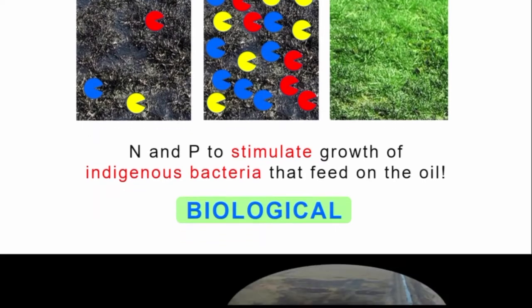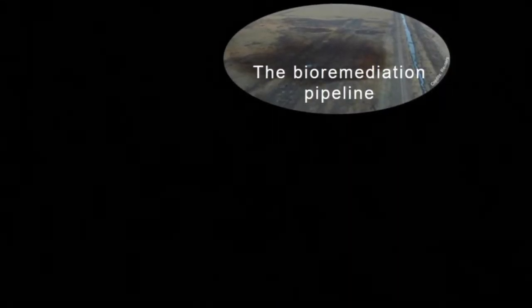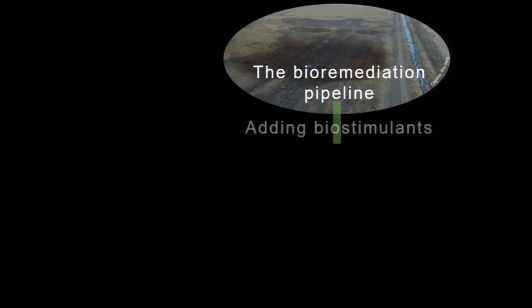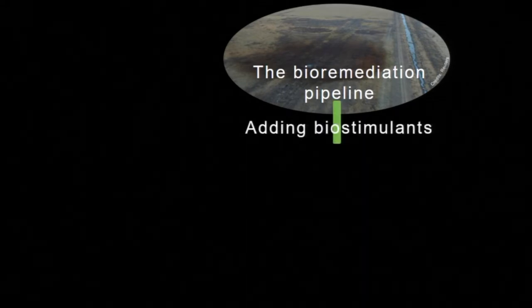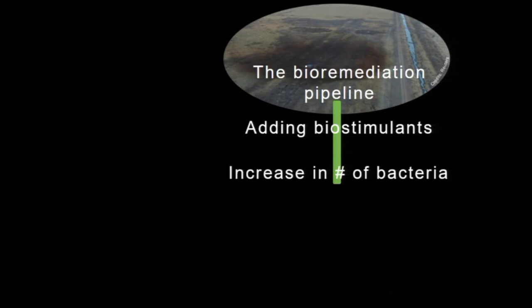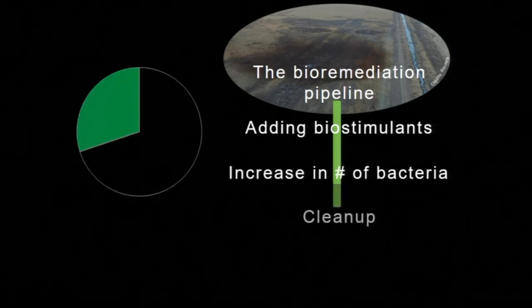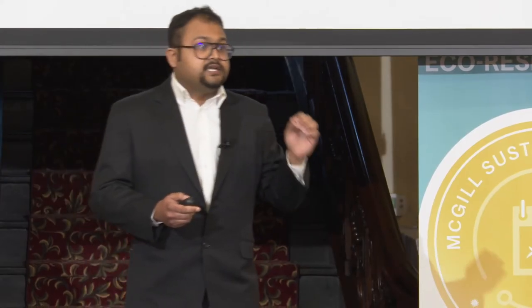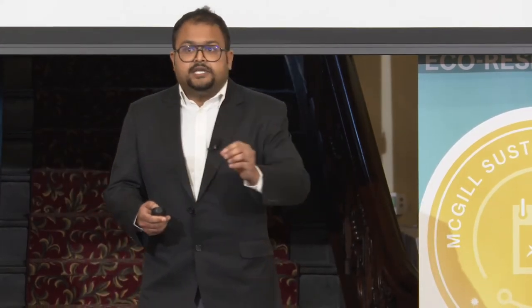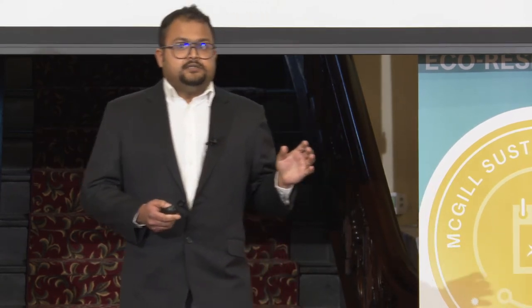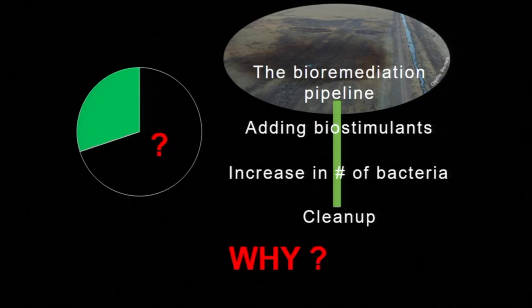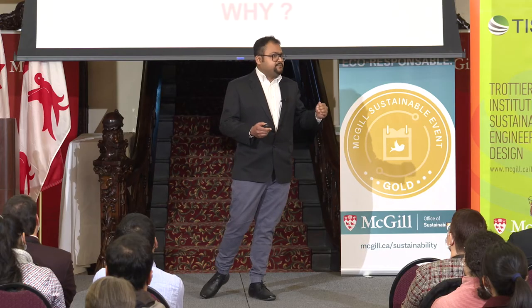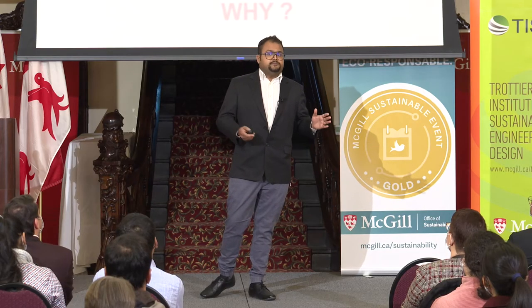Let's go over our bioremediation pipeline. You have an oil spill, you add nitrogen and phosphorus, the bacteria grow in number — so far so good. But even though we did all these steps, there is still a fraction of sites that are uncleaned. There is still residual contamination in substantial amounts in a number of sites. Why is this so? Why is it that despite following all the steps, we still don't have good cleanups?